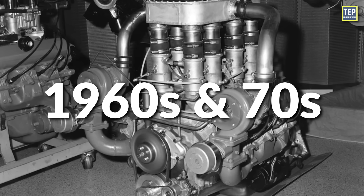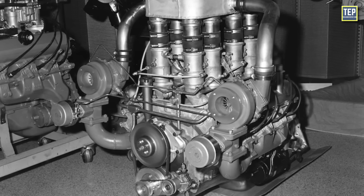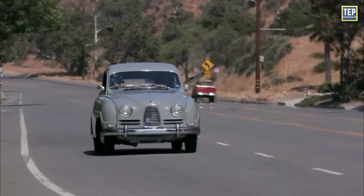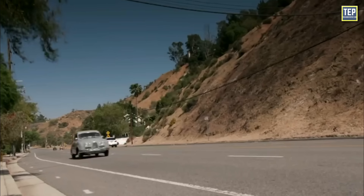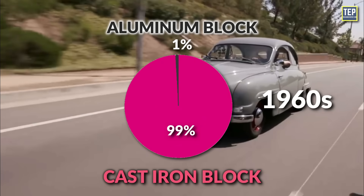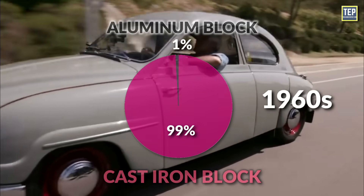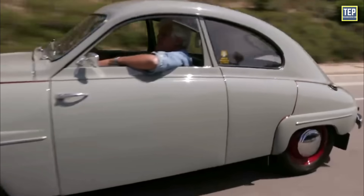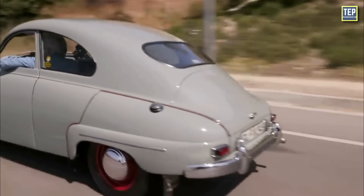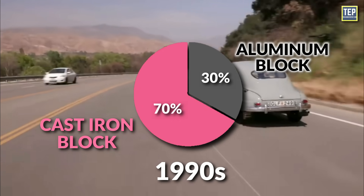In the 1960s and 70s, aluminum engine blocks made an appearance in mass-produced passenger cars, holding approximately 1% of the market share for newly produced internal combustion engines during that period. Over time, this percentage increased, reaching almost one-third by the late 1990s.